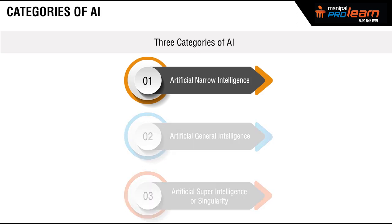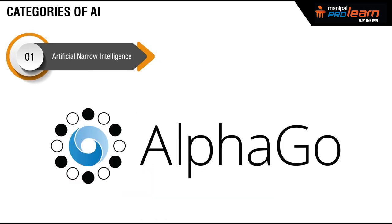Artificial Narrow Intelligence is a system which can perform one specific activity, but it can perform much better than human beings. Examples include the game AlphaGo, which is an AI to play the game of Go. That is an Artificial Narrow Intelligence, and today most AI systems are in this category.